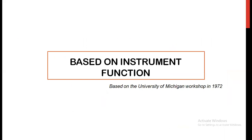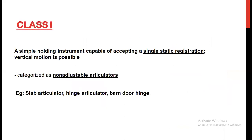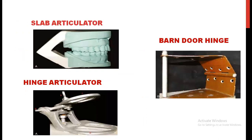The last classification is based on instrument function, given by the University of Michigan workshop in 1972. Class 1 is a simple holding instrument capable of accepting a single static registration — meaning only vertical motion is possible. The non-adjustable articulators fall under class 1. Examples are the slab articulator, hinge articulator, and barn door hinge articulator. These are the pictures of the slab, hinge, and barn door hinge articulators.